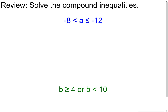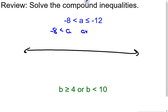Being a very visual person, I like to visualize what this looks like. Since it's an AND inequality, if I pull those two apart, this one says negative 8 is less than a, and a is less than or equal to negative 12. Graphing a is greater than negative 8 going right, and a is less than or equal to negative 12 going left — there are no solutions that are both greater than negative 8 and also less than or equal to negative 12. So this compound inequality has no solution.